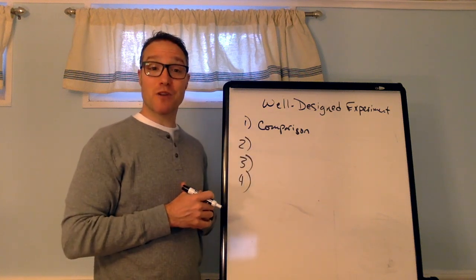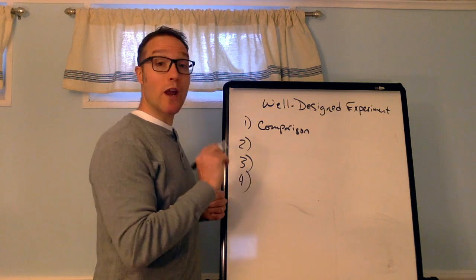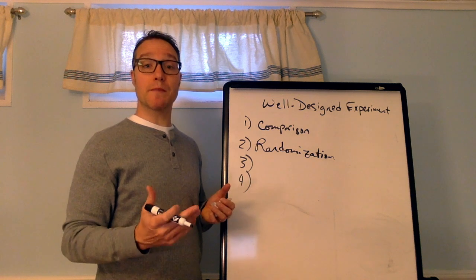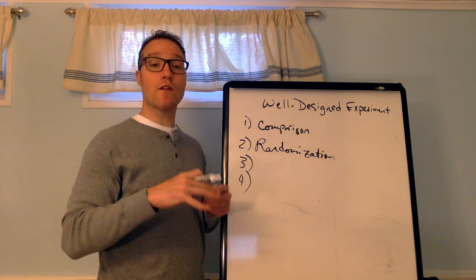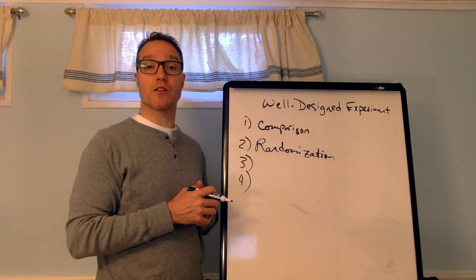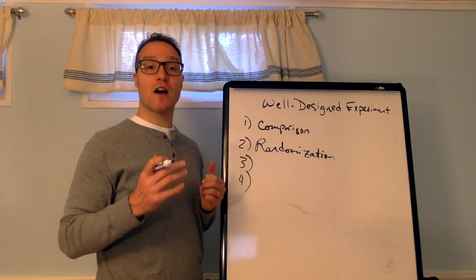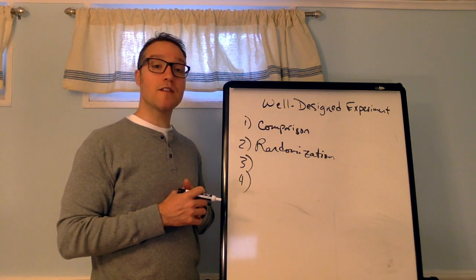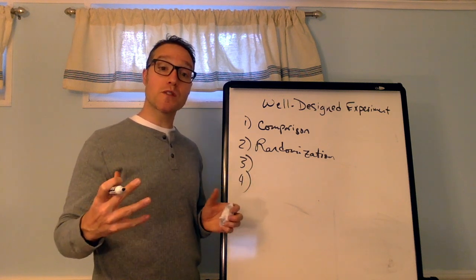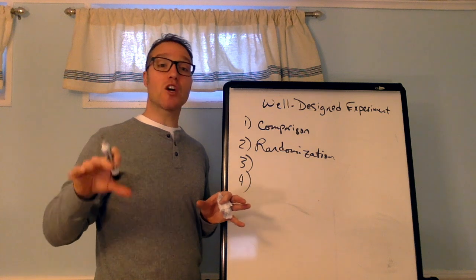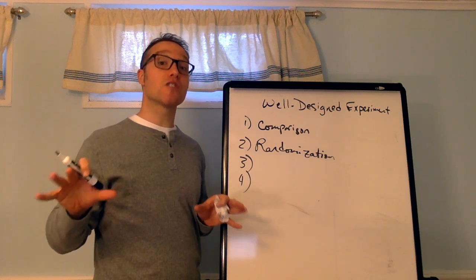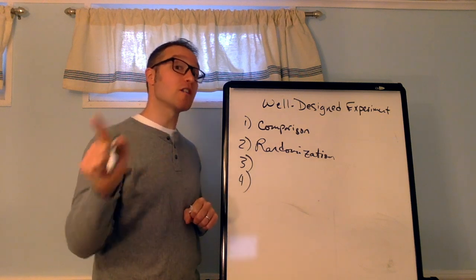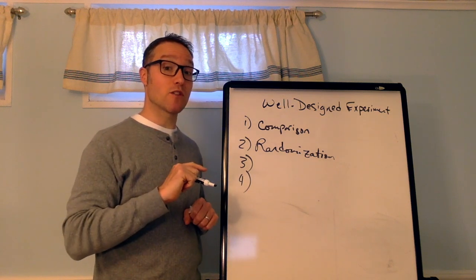The second principle of a well-designed experiment is random assignment. You want to use chance to assign experimental units to treatments. Doing so helps create roughly equivalent groups of experimental units by balancing the effects of the other variables among the treatment groups. So you want diverse groups that are roughly equivalent in terms of their diversity. That's what randomization does, random assignment. And it also allows you to infer cause and effect if we get a significant result.